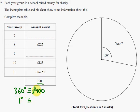So if 360 degrees is £900, then 1 degree, I'm going to have to divide 900 by 360 to find 1 degree. I'm going to write that 900 divided by 360. That equals 2.5, so £2.50 is 1 degree.